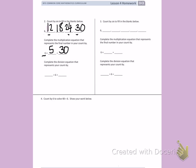Complete the division equation that represents your count by. When I'm dividing, I start with my total. So I have 30 divided by 6 equals 5.